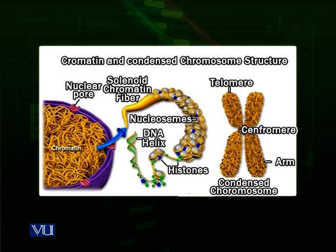We call them chromosomes. You can see the various parts of a chromosome: the constricted region in the center is called the centromere, on the sides of which are the arms, and the very ends of the arms are called the telomere. So this is a generalized idea of how chromatin material is present inside the nucleus in the non-dividing phase and in the dividing phase.